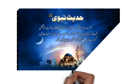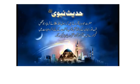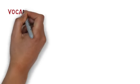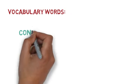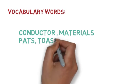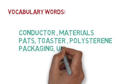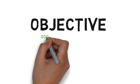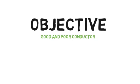The vocabulary words to be done for this week as written work are: conductors, materials, pads, toaster, polystyrene, packaging, and utensils. Our objective for this week is to learn about good and poor conductors of heat.